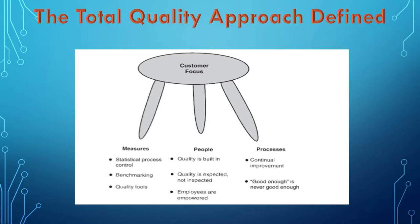The people component: quality is built in — quality is expected, not inspected. Employees are empowered, and employee empowerment is a key element of the total quality approach. And obviously, the processes: there has to be continual improvement. The good enough is never good enough — basically saying that quality is dynamic and there always has to be continual improvement, trying to make the product better. This is not a static concept, and as mentioned before, what may be of good quality today may not be tomorrow.